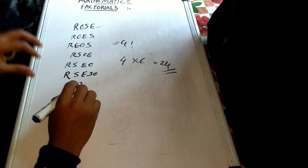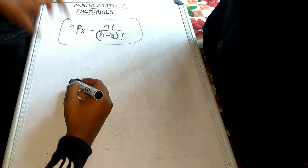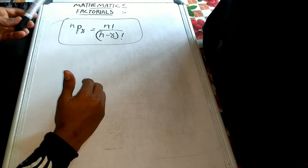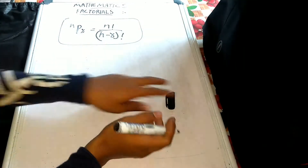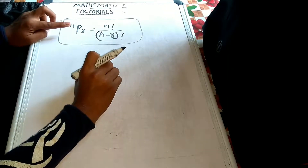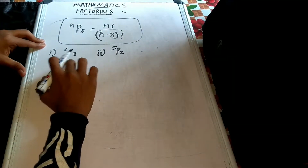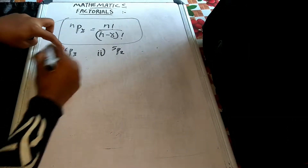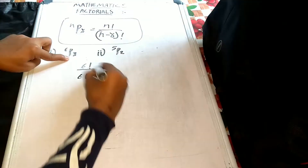So we will go to the next permutation equation. The permutation formula is n factorial by n minus r factorial. So n factorial is the total objects. We have two questions: first question 6P3, and second question 5P2. So that is n factorial by n minus r factorial, which gives 3 factorial.